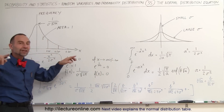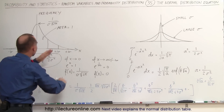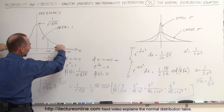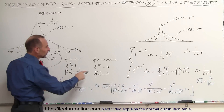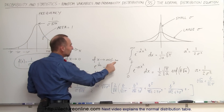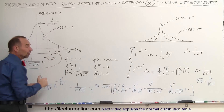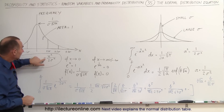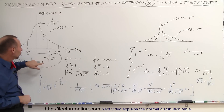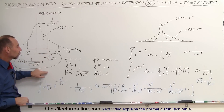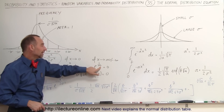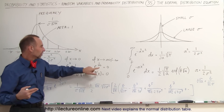What happens when we go out to infinity, both in the positive and negative direction? When x becomes really large, the value for f of x becomes very small. Since x is squared, it doesn't matter if it's a positive or negative number — x squared will always be positive. And with the negative in front, e to the minus x squared becomes 1 over e to the positive x squared. So when x becomes very large, it becomes 1 over infinity.